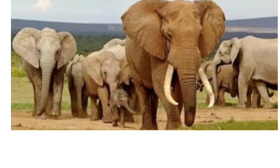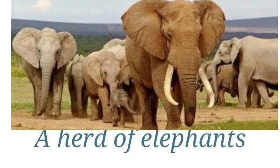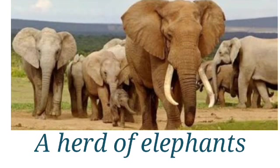See the next image. What is this? Elephants. How many elephants are there? There are a group of elephants. The group name for elephants is herd. A herd of elephants. Here, herd is the collective word for elephants.